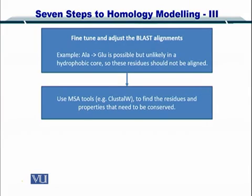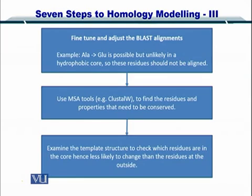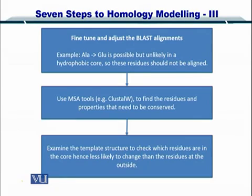You can use multiple sequence alignment tools such as Clustal-W to find residues and properties that need to be conserved. By looking at the conserved properties, you can make sure that amino acids giving rise to those properties are conserved and therefore not substituted. You also examine the template structure to check which residues are in the core — hence less likely to change — than the residues on the surface. The surface of the protein has those amino acids which evolve and are substituted more frequently compared to those in the core.